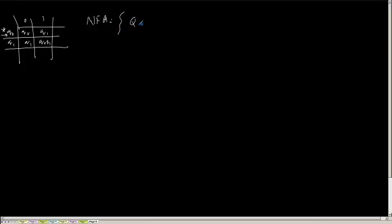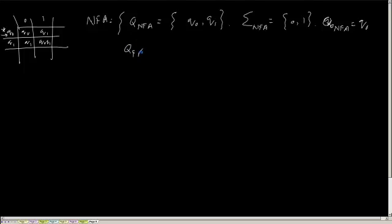What will be my qNFA? My qNFA is q0, q1. My alphabet of NFA is 0, 1. And my start state q0 NFA is q0, and qF NFA is q0. The first step I will take to convert it to a DFA is my alphabet of a DFA will be same as alphabet of a NFA.